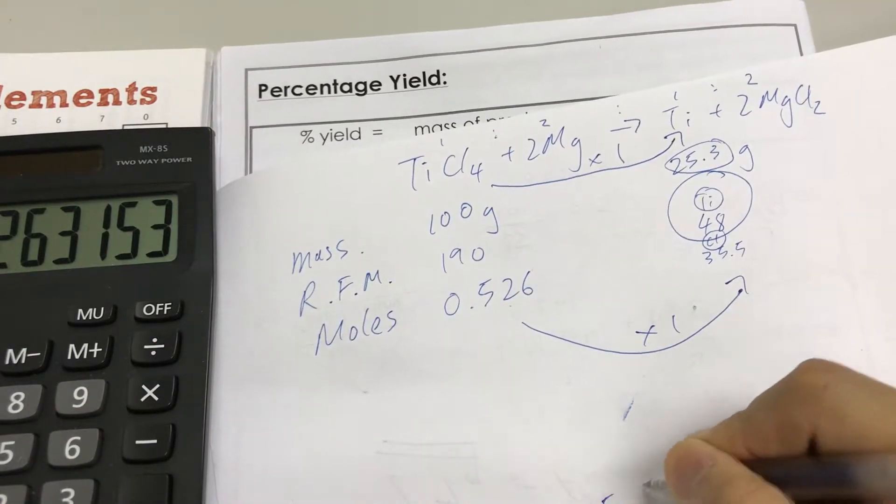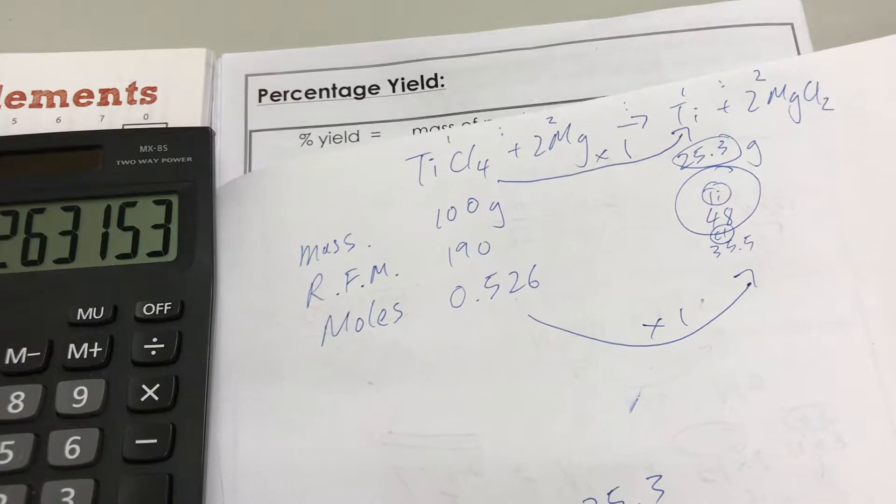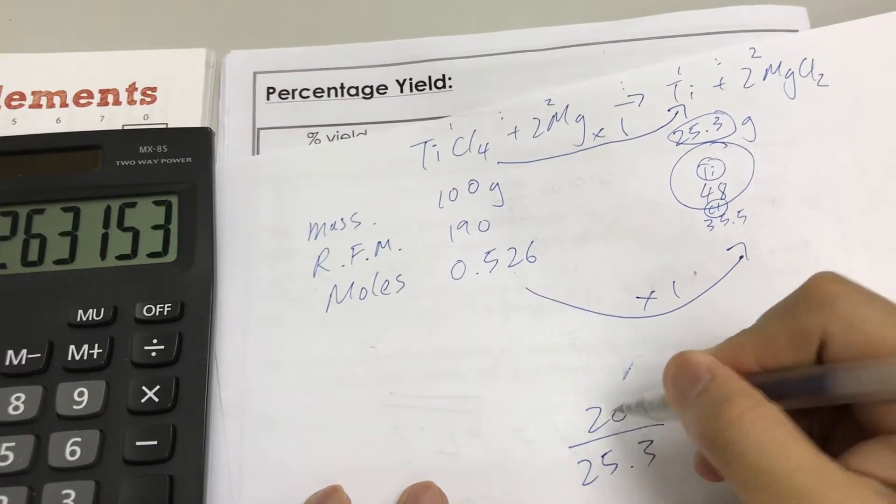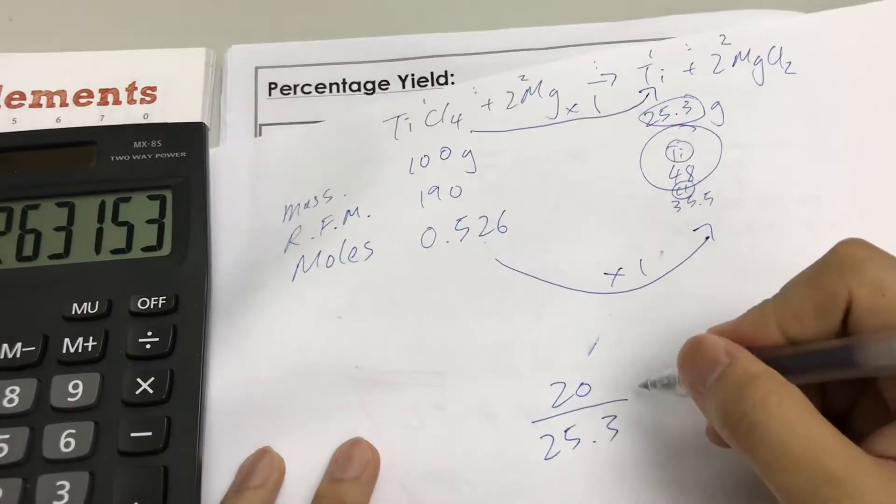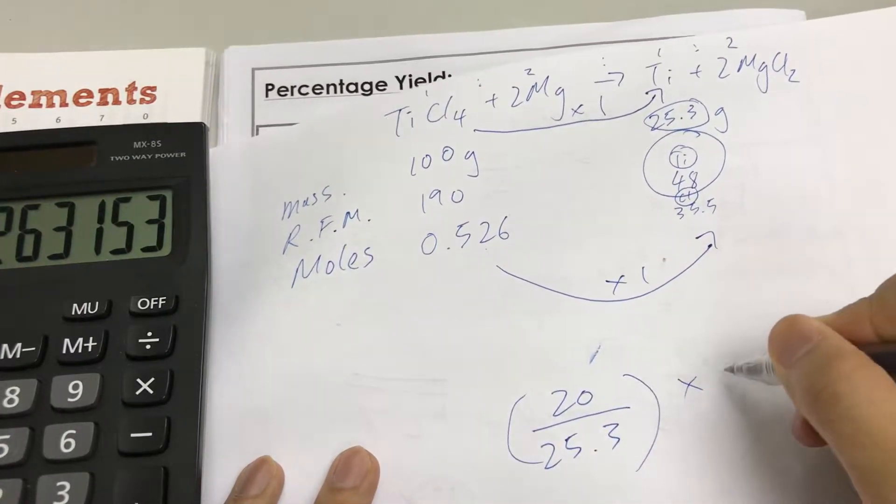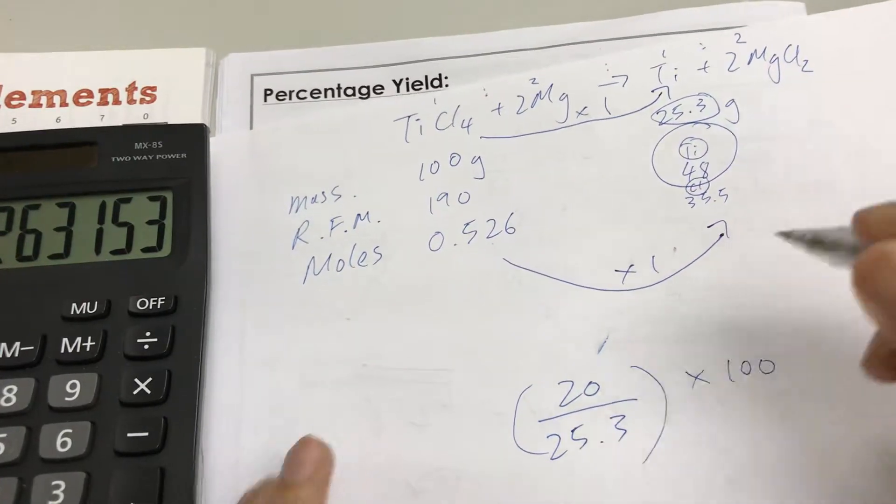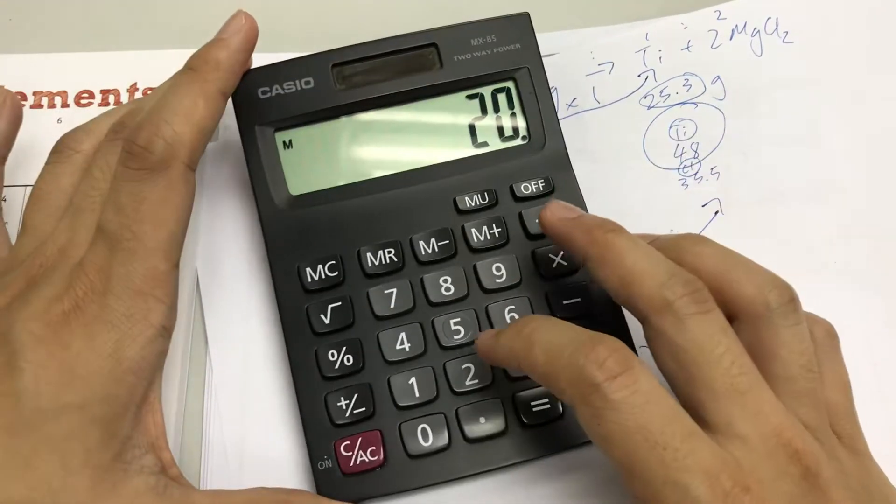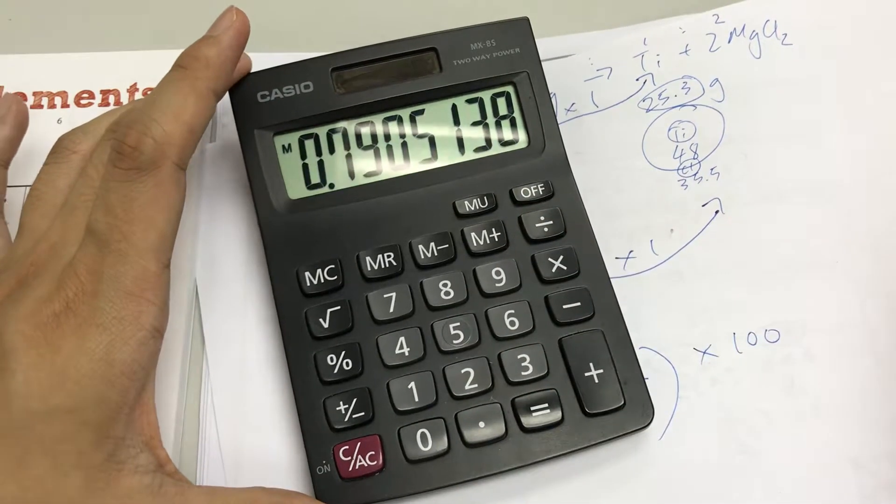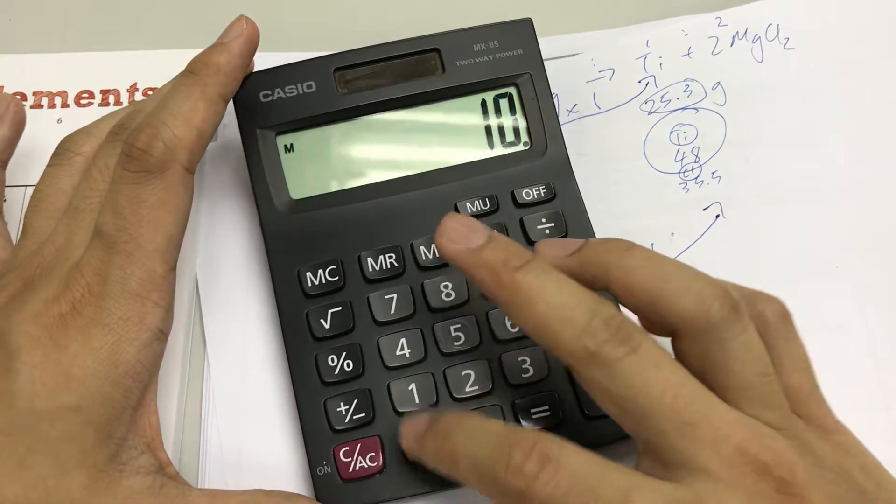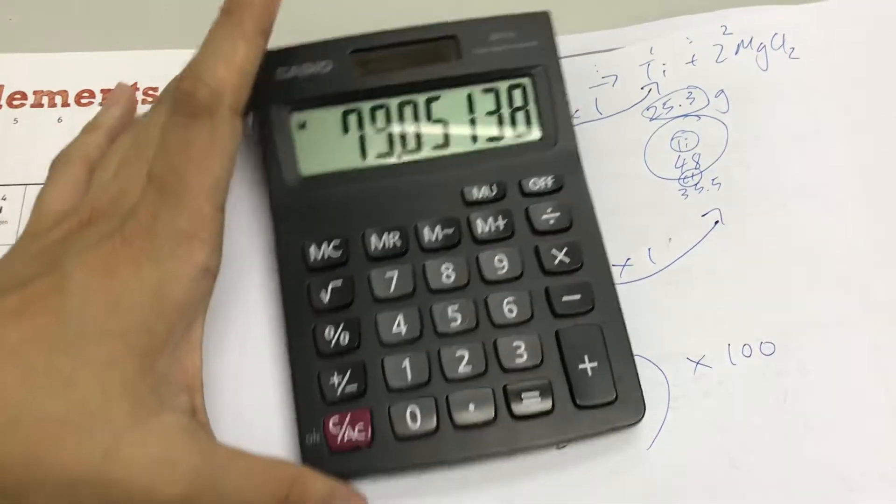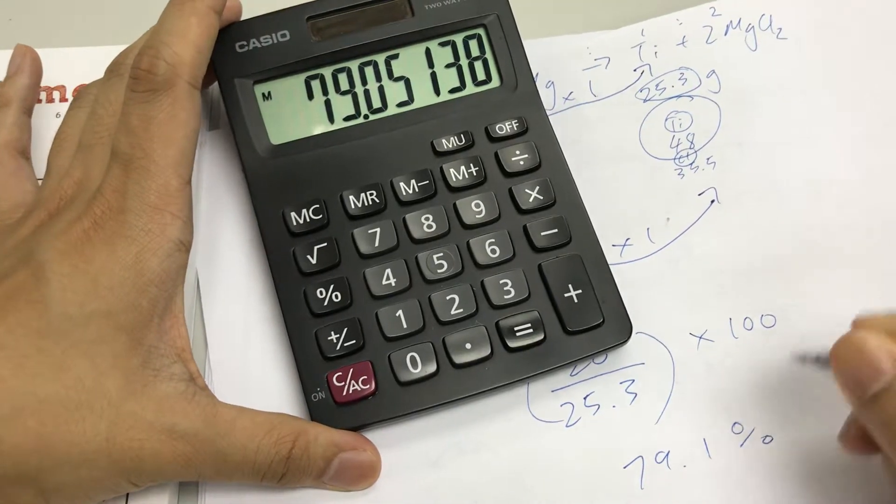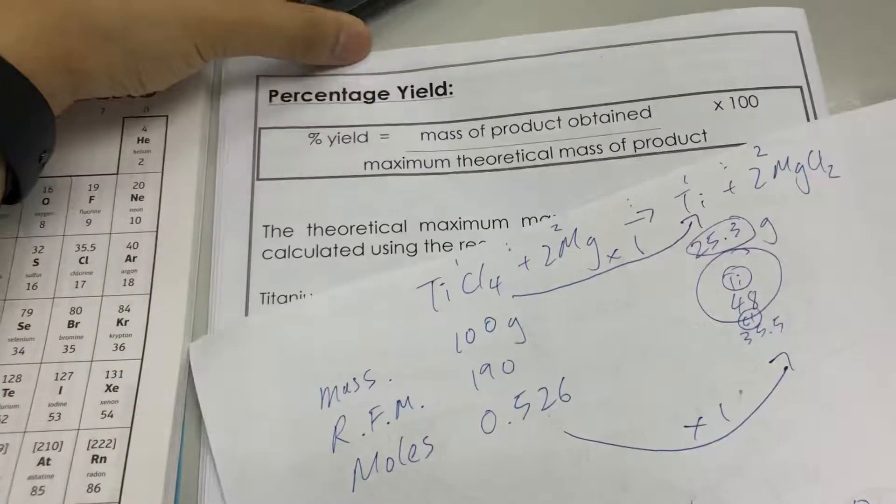You calculated it: supposedly 25.3 grams will be produced, but only 20 grams were made. So you do that calculation times 100, and you will get 20 divided by 25.3 times 100, so you get 79.1 percent percentage yield.